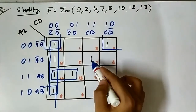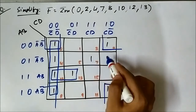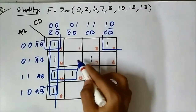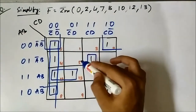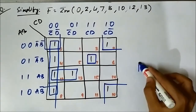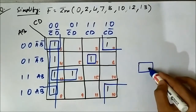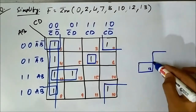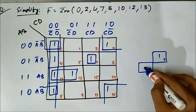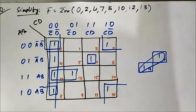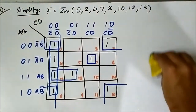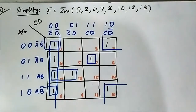This is an interesting case: cell 7 has no adjacent marked cell. Do not make the mistake of grouping cell 13 with cell 7 diagonally — that is wrong. Only top-bottom and left-right adjacent cells can be grouped. So this group will only consist of one single cell. Groups can be a single cell, pair, quad, octet, or 16-cell group.